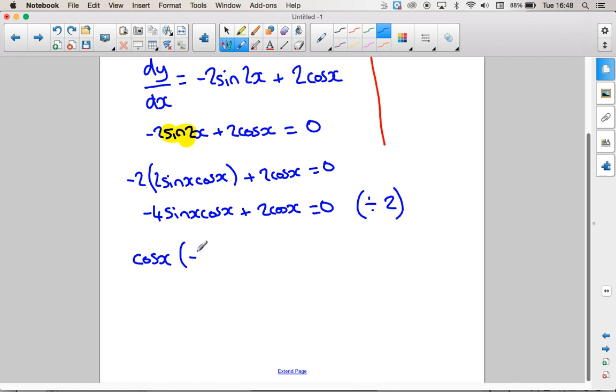So that will give me minus 2 sin x plus 1 equals 0. And now I'm in a situation where I've got 2 things being times together to give me 0. So either this term here is 0. Or this term here is 0. And if we rearrange this, that means that sin x is equal to a half.